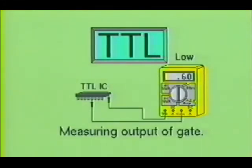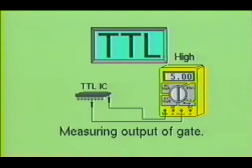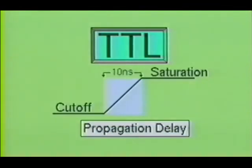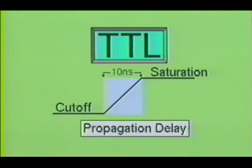The logic high level of the TTL logic family will typically be 5 volts, and the low logic level will typically range from 0.2 to 0.6 volts. The switching speed, or propagation delay, of a standard TTL device will be approximately 10 nanoseconds — the time required for the device to go from cutoff to saturation or saturation to cutoff. The TTL device will generally consume about 10 milliwatts per gate.